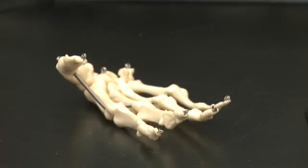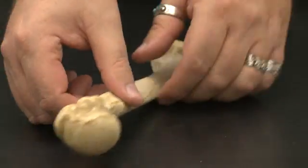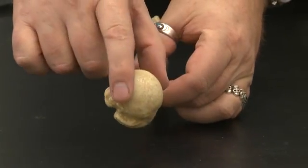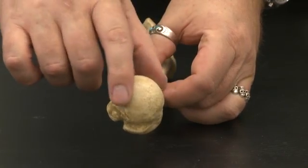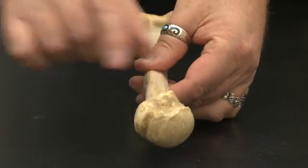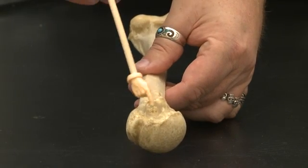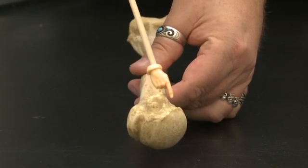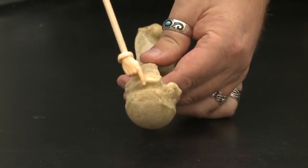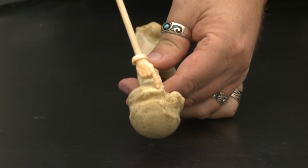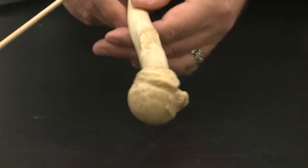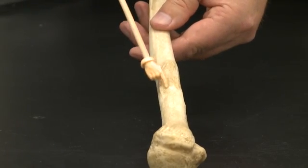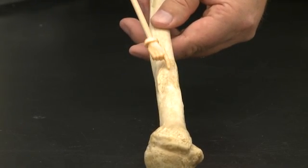Bones of the arm and hand. This is a humerus. The humerus has the head, the lesser tubercle is the structure here. This is the greater tubercle. This rough area here is the deltoid tuberosity.